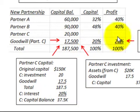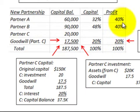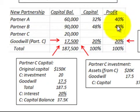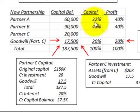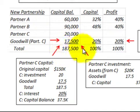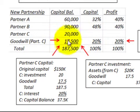For the profit and loss ratios, partner C is going to receive 20%. The remaining 80% is divided evenly between partner A and partner B, so they each get 40%. They had a 50-50 split in the old partnership, and that proportional split carries over within the 80% that remains. So the new partner C receives a 20% interest in profits and a 20% interest in capital. Partner A has 32% of the new capital and partner B has 48%, based on the new capital balance of $187,500.